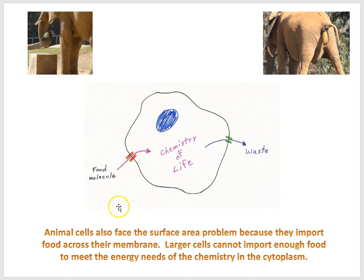But animal cells also face the surface area problem because they import food across their membrane. So, here's an animal cell, and we've got food entering, again it's proteins that have to transport the food in. So the surface area of the cell is going to limit the number of these proteins that can exist in the membrane, and so limit the amount of food that can be imported into the cell. Larger cells cannot import enough food to meet the energy needs of the chemistry in the cytoplasm.